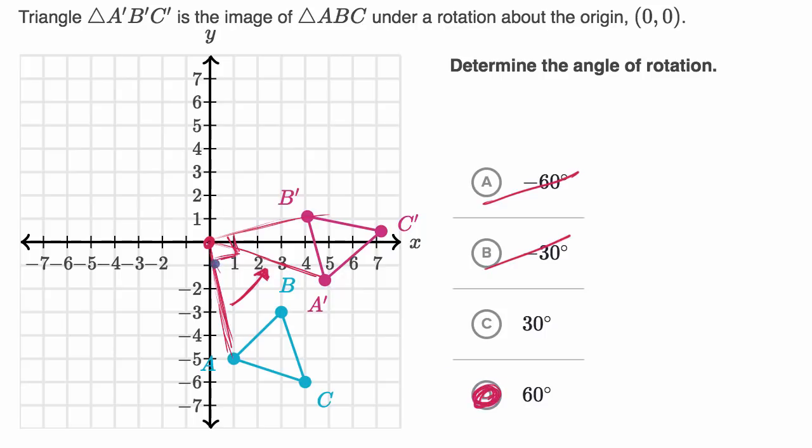Another way to think about it is that 60 degrees is one-third of 180 degrees, which this also looks like right over here. And if you do that with any of the points, you would see a similar thing. So just looking at A to A prime makes me feel good that this was a 60-degree rotation.